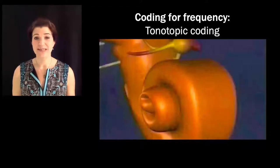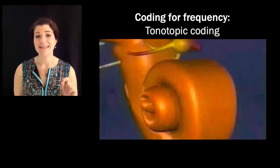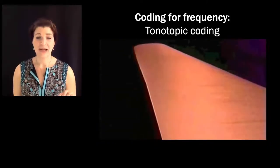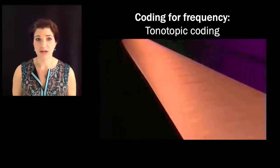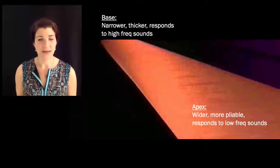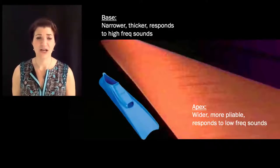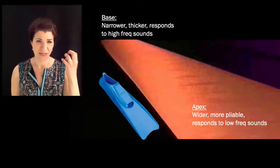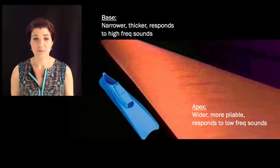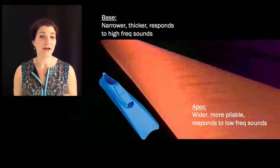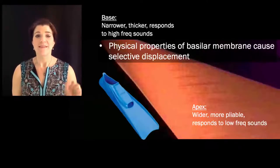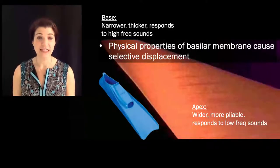Why does the base respond to high-frequency sounds and the apex to low-frequency sounds? It has everything to do with the shape and nature of the basilar membrane. If we could unroll the cochlea and look at the basilar membrane, we'd see that the base and apex are physically different. The base is narrower and thicker; the apex is wider, more pliable, and floppier — like a scuba diver's flipper. When high-frequency sounds arrive, the base moves more; when low-frequency sounds arrive, that wide, floppy, pliable apex moves more.